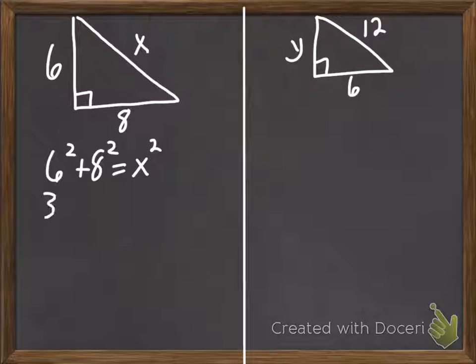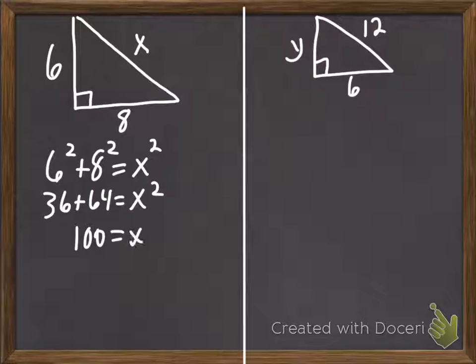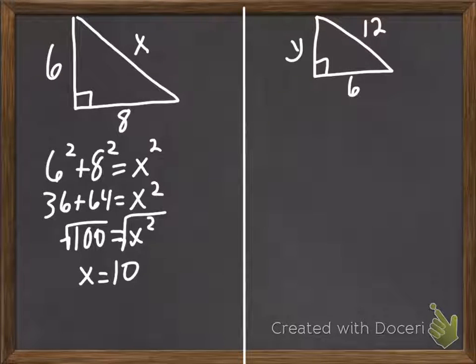So, we get 36 plus 64 equals x squared. So, 100 equals x squared. We take the square root. And the square root of 100 is 10. So, it looks like x equals 10.